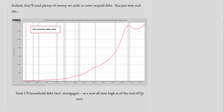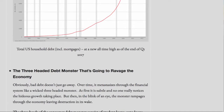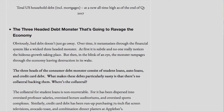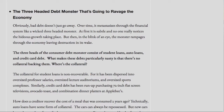Total household debt, including mortgages, reached a new all-time high as of the end of Q1 2017. The three-headed debt monster that's going to ravage the economy: obviously, bad debt doesn't just go away. Over time, it metastasizes through the financial system like a wicked three-headed monster. At first, it is subtle and no one really notices the hideous growth taking place. But then, in the blink of an eye, the monster rampages through the economy, leaving destruction in its wake. The three heads of the consumer debt monster consist of student loans, auto loans, and credit card debt.